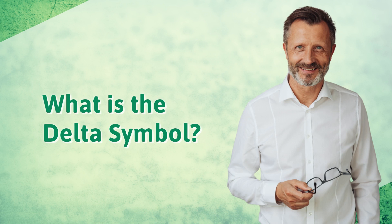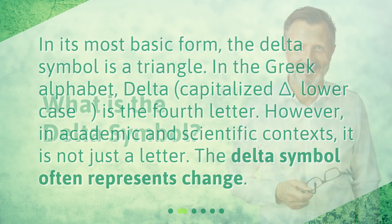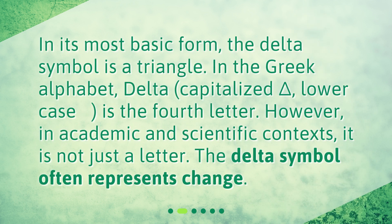What is the delta symbol? In its most basic form, the delta symbol is a triangle. In the Greek alphabet, delta — capitalized Δ, lowercase δ — is the fourth letter. However, in academic and scientific contexts, it is not just a letter. The delta symbol often represents change.